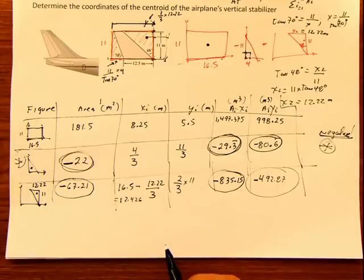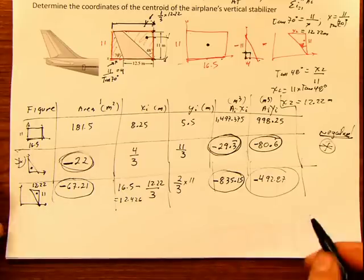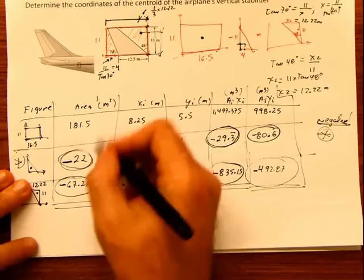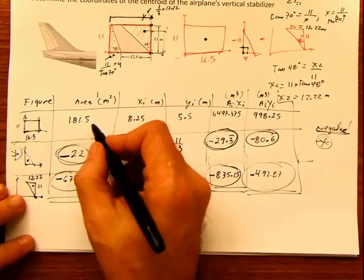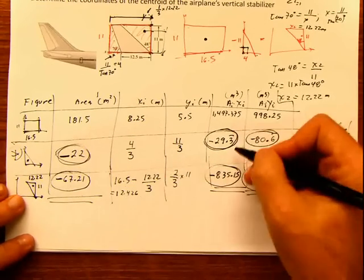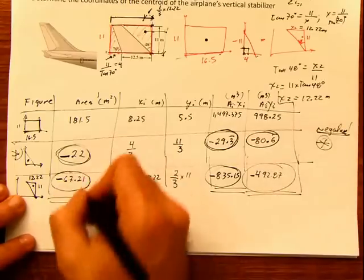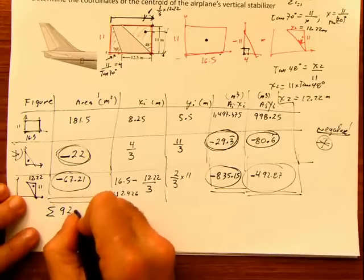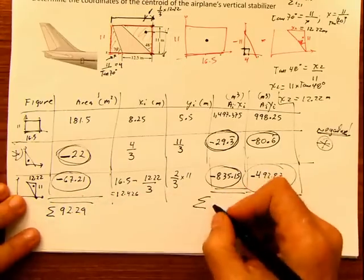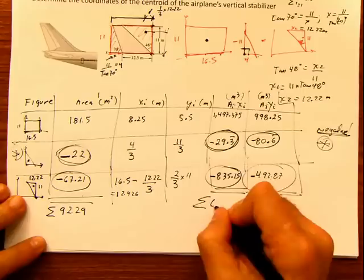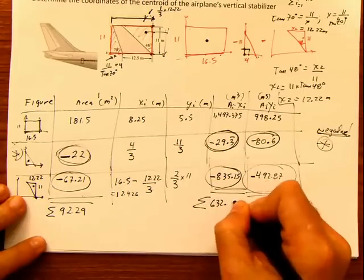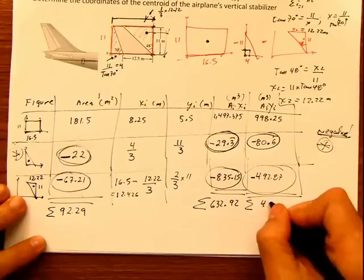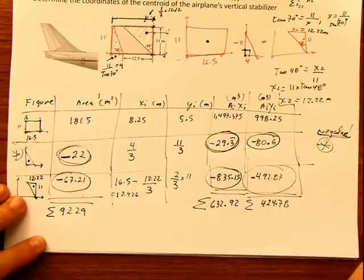Now what do we do at the end? Just add them up. So when I say add, it's not just adding. It's adding or subtracting whatever the case is. So in this case, it's going to be plus, minus, minus, plus, minus, minus, plus, minus, minus. So when you do that, this summation is going to be 92.29. And this summation is going to be equal to 632.92 cubic meters. And this summation is going to be 424.78 cubic meters.